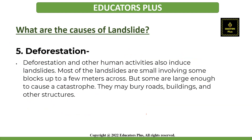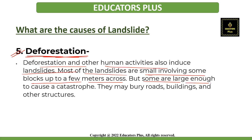The next cause is deforestation. Deforestation and other human activities also induce landslides. Most landslides are small, involving some blocks up to a few meters across, but some are large enough to cause a catastrophe, and they may bury roads, buildings, and other structures. The adverse effects of landslides can be reduced by checking deforestation on mountain slopes, following building codes for such areas, and by avoiding the construction of buildings on steep slopes.